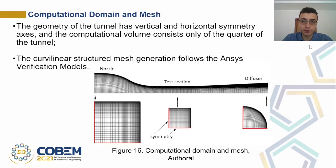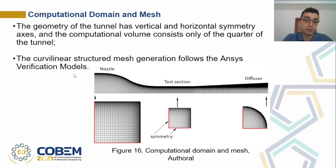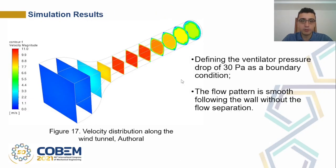The geometry of the tunnel has vertical and horizontal symmetry axes, and the computational volume consists of only a quarter of the tunnel. Here you can see the symmetry in the three parts of the tunnel, and the curvilinear structured mesh generation follows the ANSI verification model. Closest to the wall, we have a refined mesh. In the simulation, defining a ventilator pressure drop of 30 Pascals as a boundary condition, the flow pattern is smooth, following the wall without flow separation.